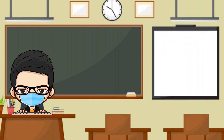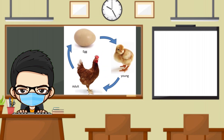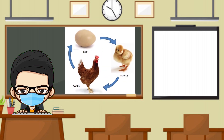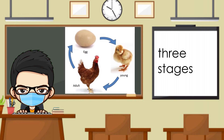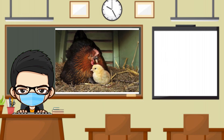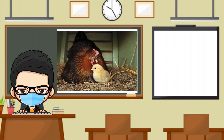Now how about these two animals? A chicken has three stages in its life cycle: it starts with an egg, then it grows into a chick, and finally an adult chicken. The chick looks like the adult but smaller.